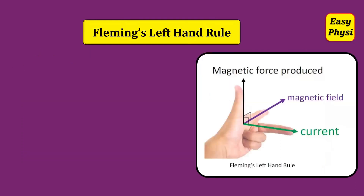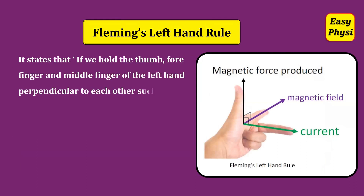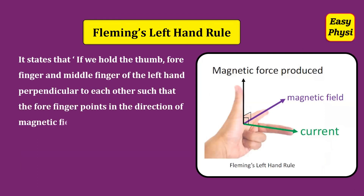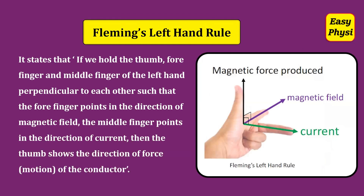Fleming's Left Hand Rule: It states that if we hold the thumb, forefinger and middle finger of the left hand perpendicular to each other such that the forefinger points in the direction of magnetic field and the middle finger points in the direction of current, then the thumb shows the direction of force on the conductor.